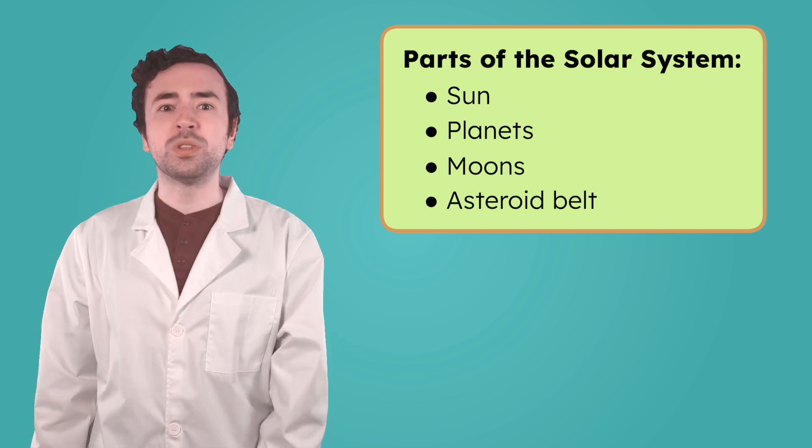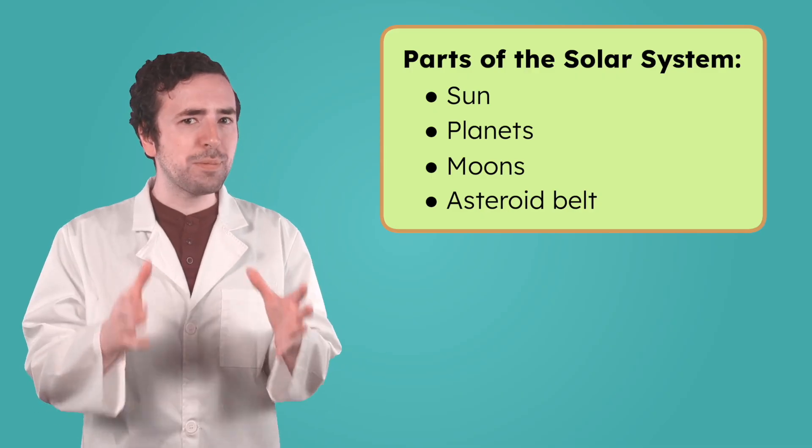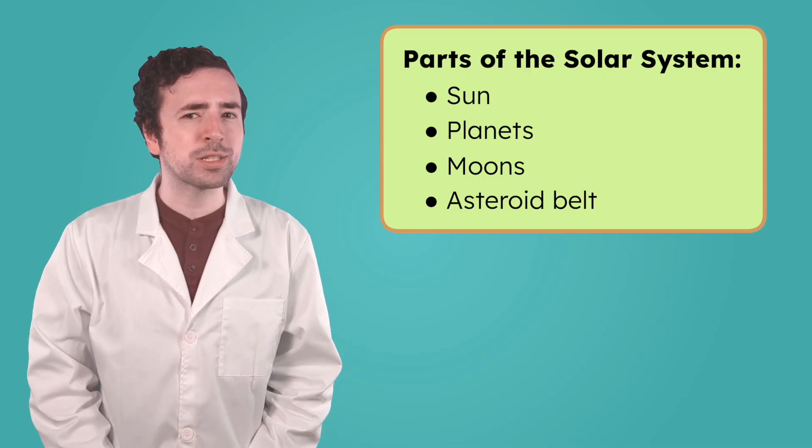The solar system is made of so many huge moving parts. Planets, their moons, and asteroids all moving around the sun. But what keeps everything moving along its path?